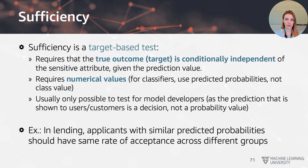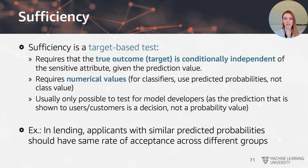The final criterion is sufficiency, a target-based test requiring that the true outcome is conditionally independent of the sensitive attribute given a prediction value. This requires numerical values — for classifiers we can use predicted probabilities, as seen with logistic regression — and is usually only testable by model developers who have access to predicted values, not just final class labels. An example in lending: applicants with similar predicted probabilities should have similar rates of acceptance across different group memberships.